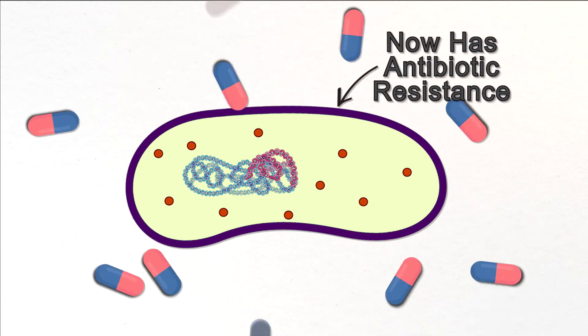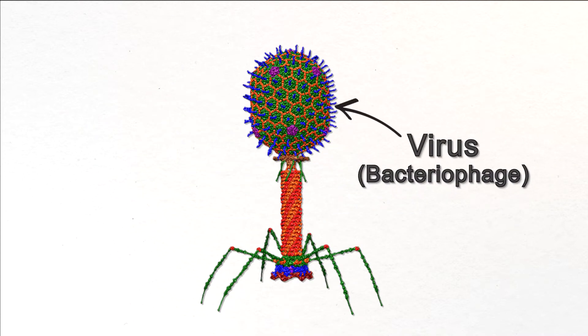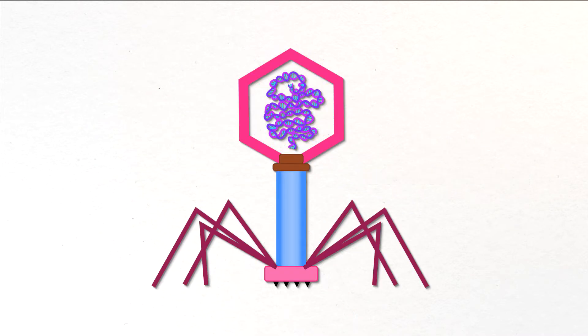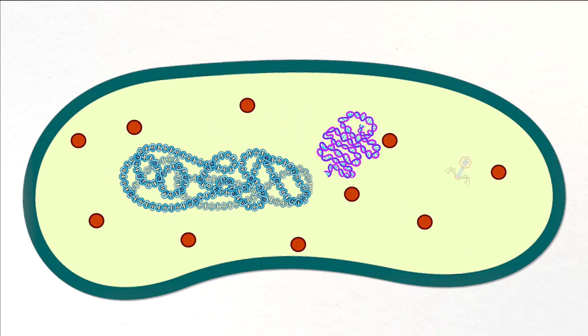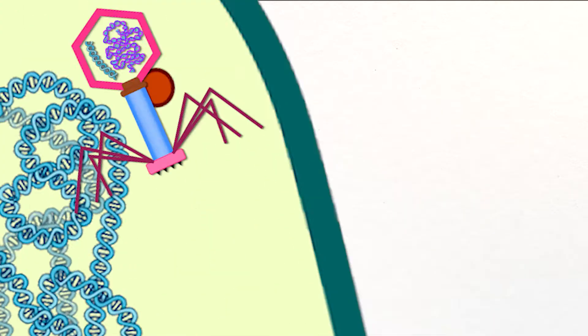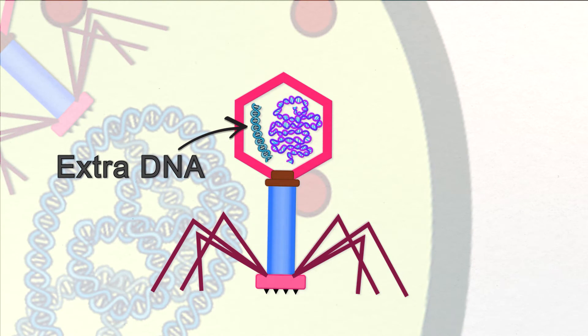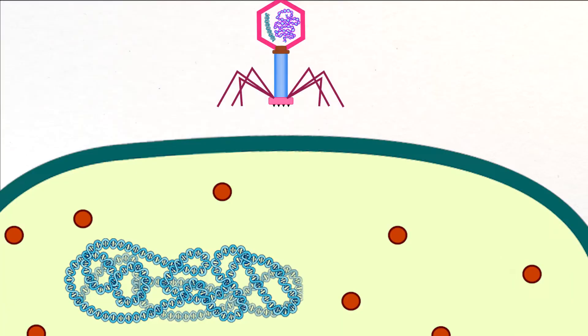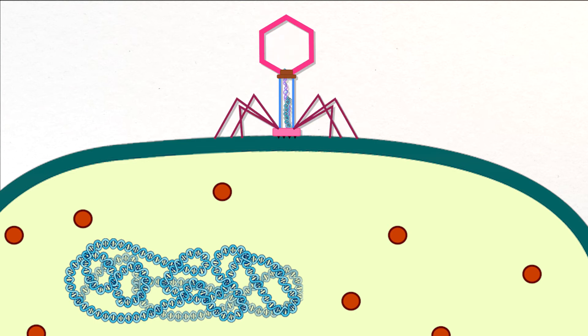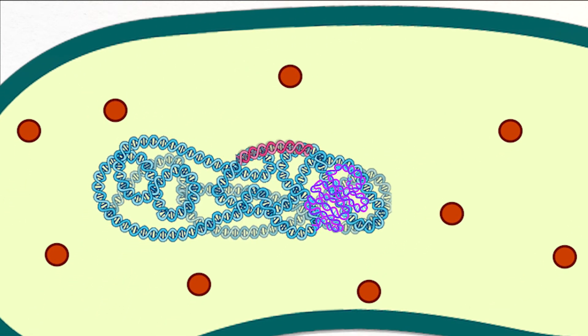But why go through all this trouble when you can have a virus do the work for you? Viruses reproduce by injecting their DNA into cells, which then proceed to make more viruses. Sometimes other pieces of DNA are even captured along with the virus' DNA, and then hand-delivered to the next cell, where the viral DNA and or the captured DNA can be integrated into the cell's DNA.